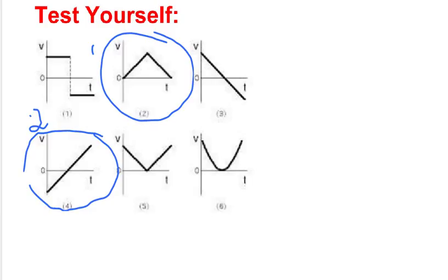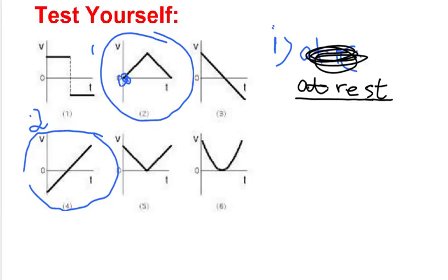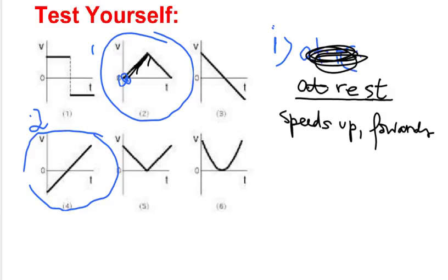For number one, it starts out with a zero velocity, so at the beginning he's at rest. Any time you see 'at rest,' it means your velocity is zero. Then he speeds up, and because this is above the t-axis, he speeds up — or accelerates — going forwards. And then at this point, he starts slowing down, but still forwards. So he slows, but still forwards.